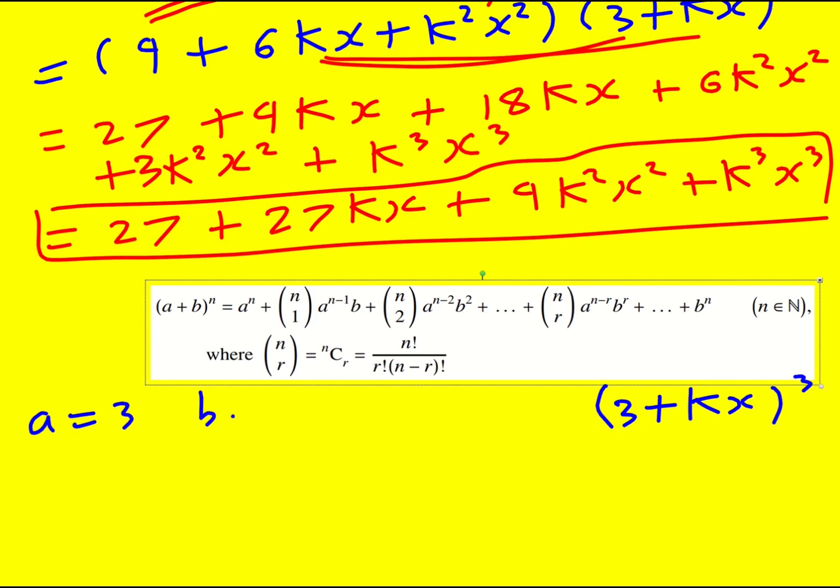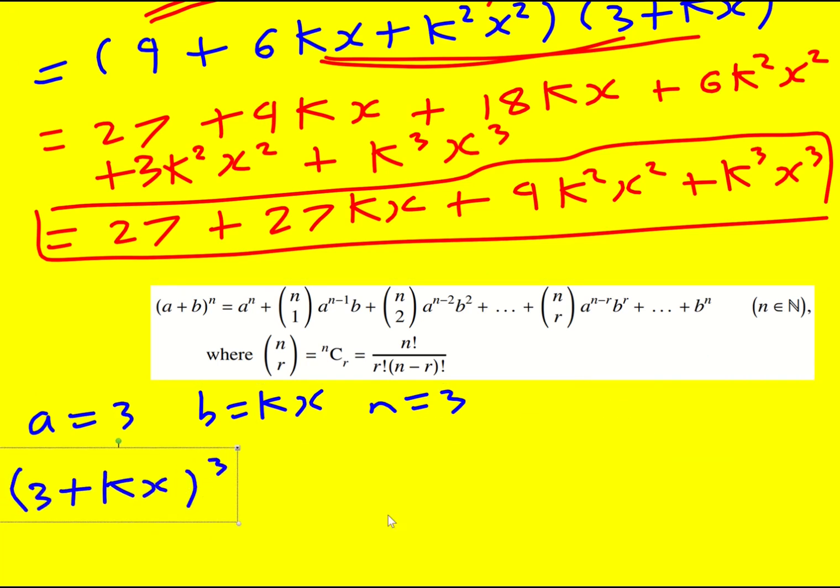So now a is 3, b is kx and n is 3. So I'm going to get 3 cubed plus 3c1 times by 3 squared times by kx.